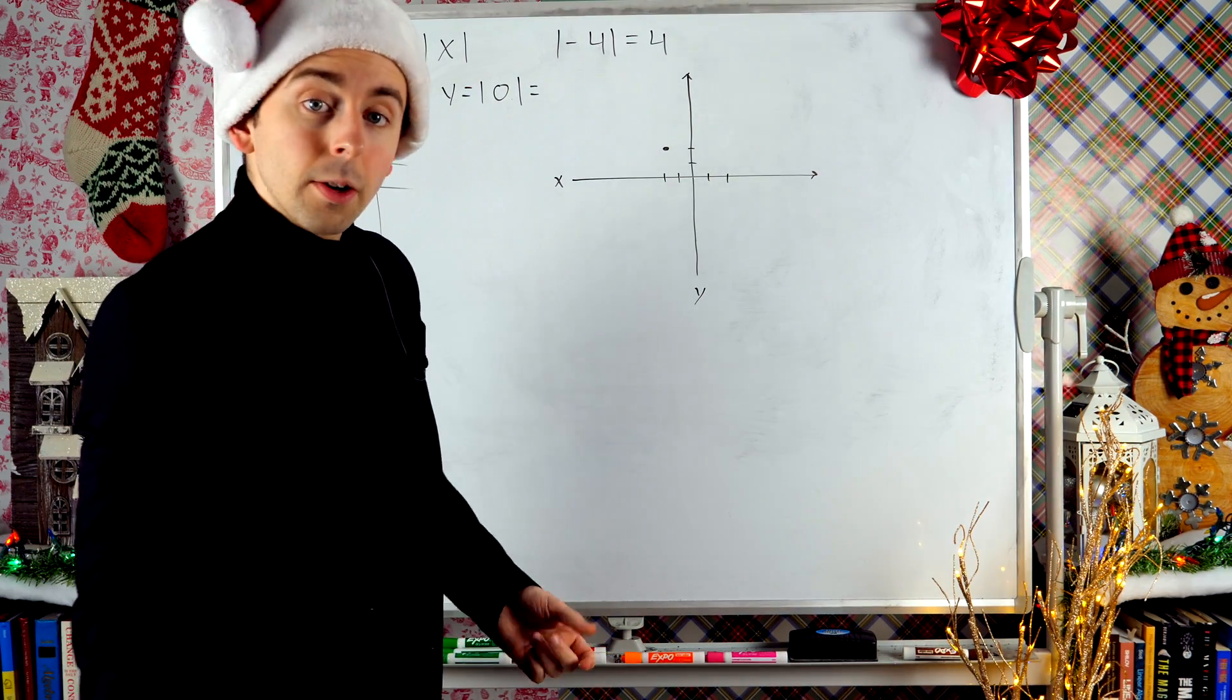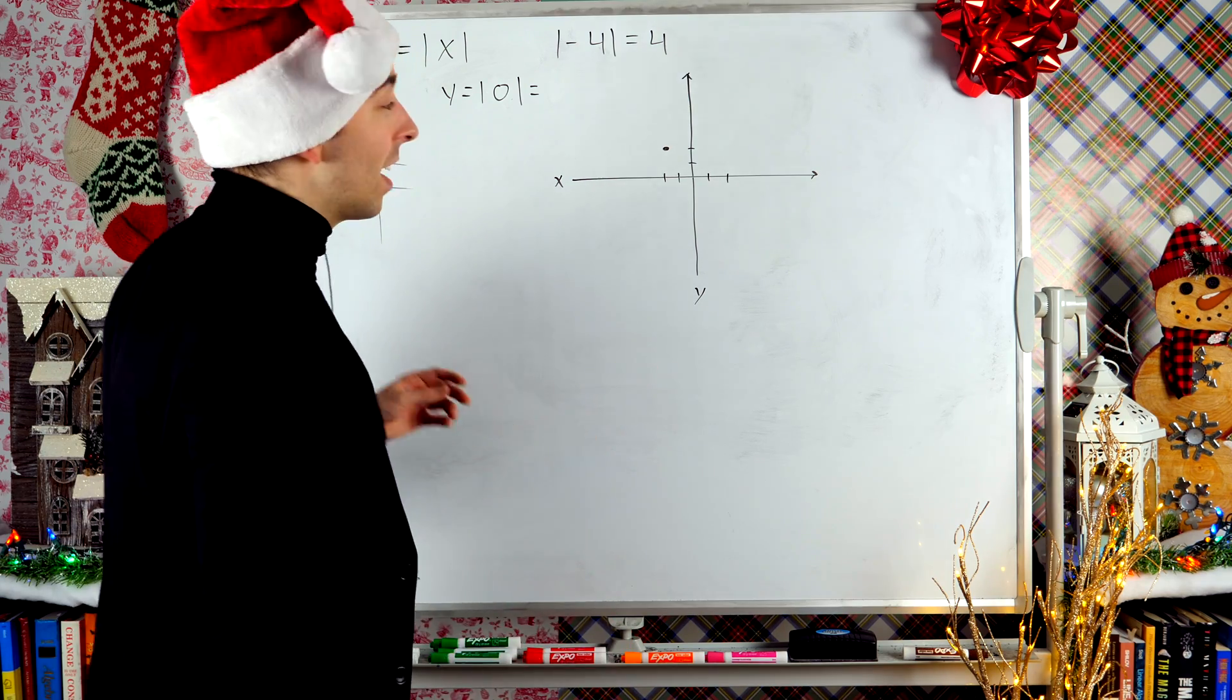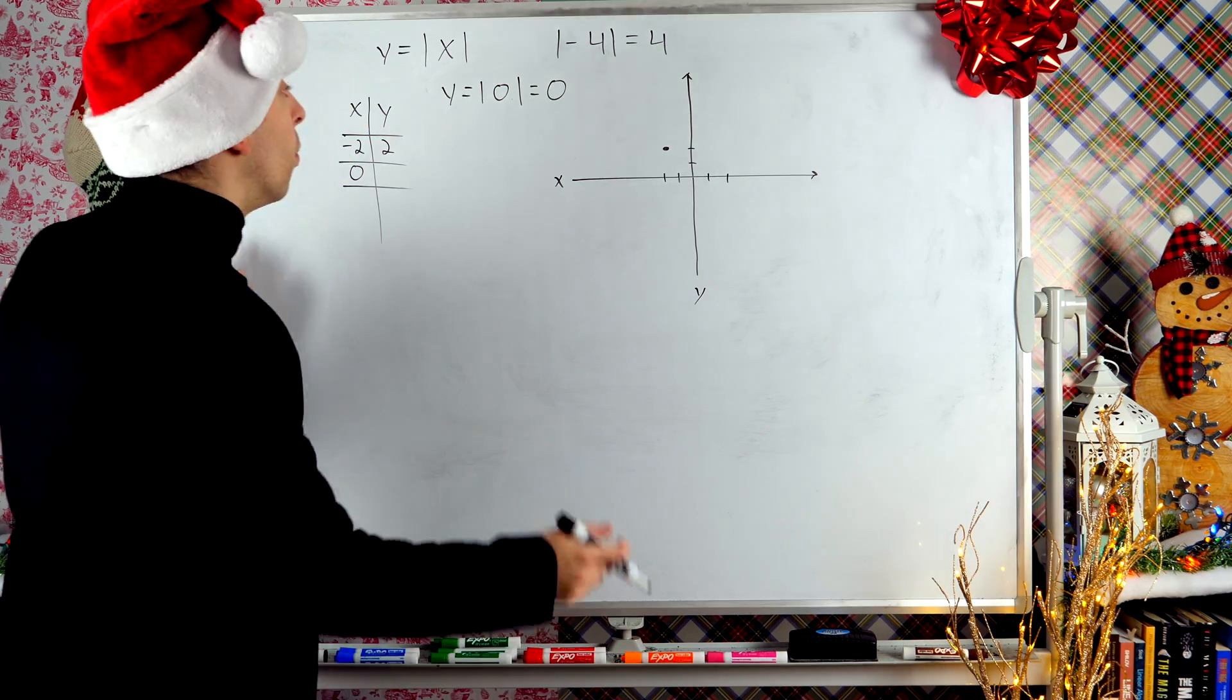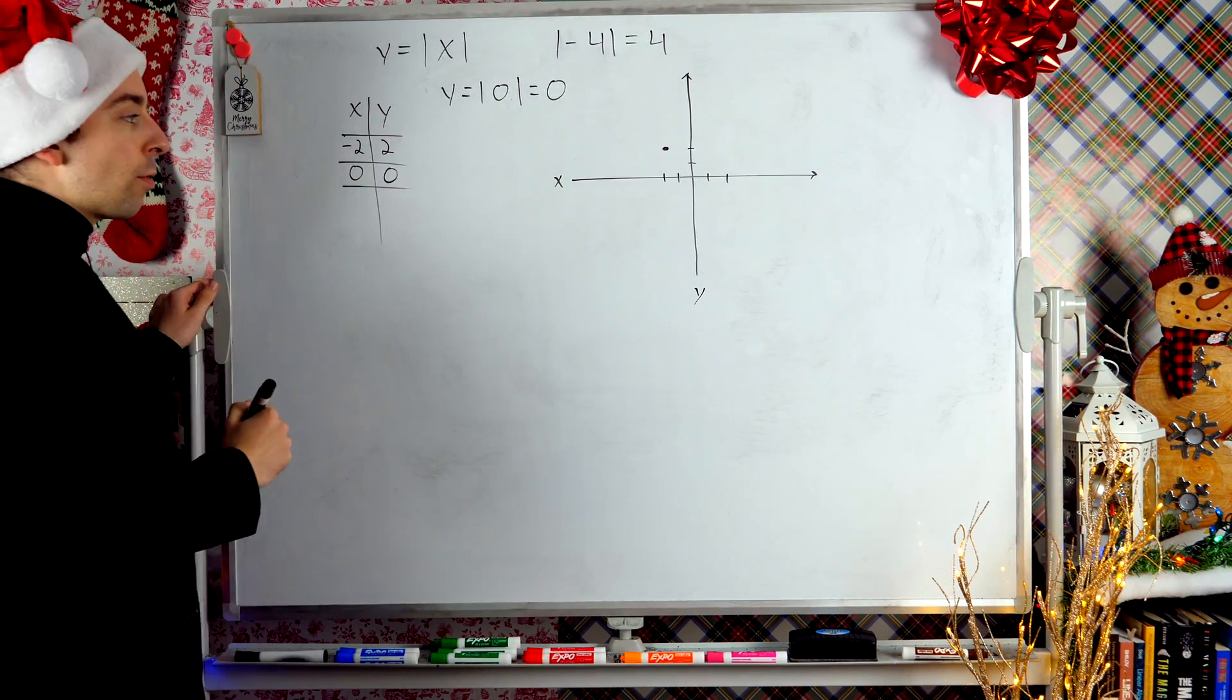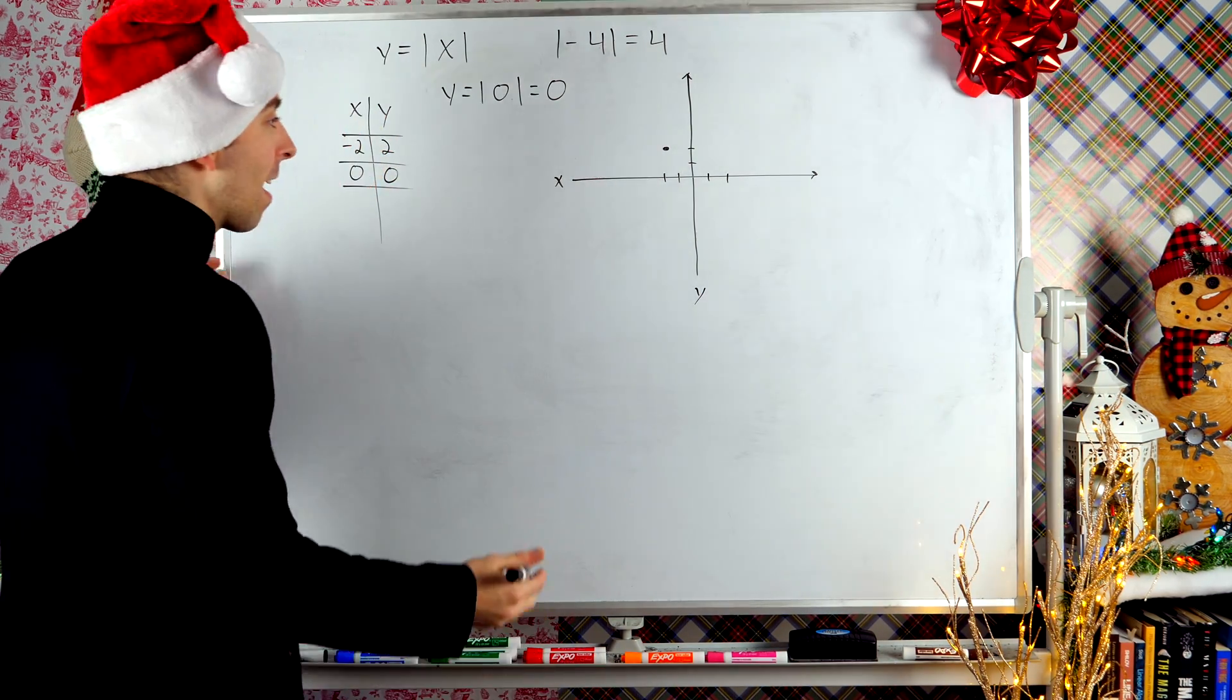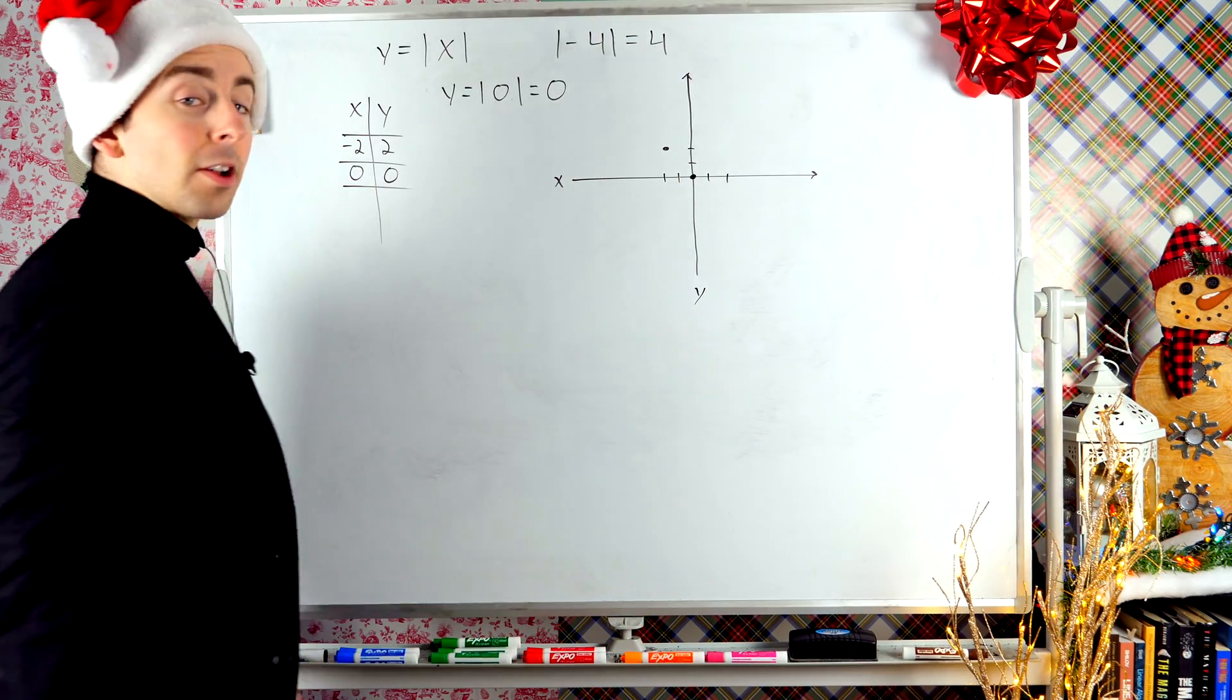Since zero is not negative, the absolute value doesn't change it. So the absolute value of zero is just zero. So the y that corresponds to zero is zero. Zero, zero is another point on my graph. So I'll go ahead and plot that there. That's right on the origin.